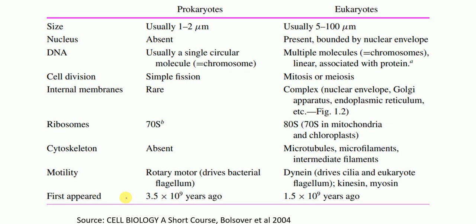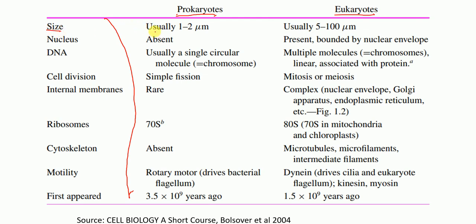Hello everyone. In this lecture today I'm going to provide you the differences between prokaryotes and eukaryotes. These are the points based on which we will make the differences. First, the size. Size of the prokaryotes is usually 1 to 2 micrometer, whereas the size of the eukaryotic organism is usually 5 to 100 micrometer.